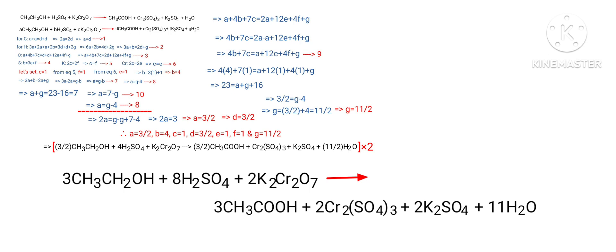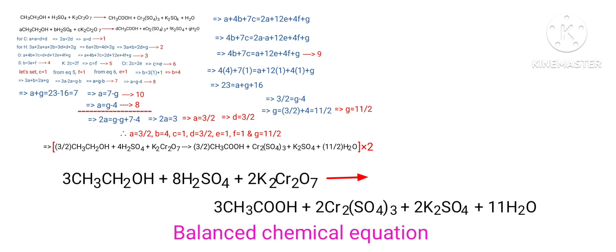Therefore the final balanced equation is: 3·CH3CH2OH plus 8·H2SO4 plus 2·K2Cr2O7 gives 3·CH3COOH plus 2·Cr2(SO4)3 plus 2·K2SO4 plus 11·H2O. The equation is now balanced.